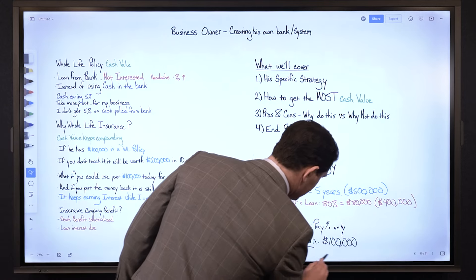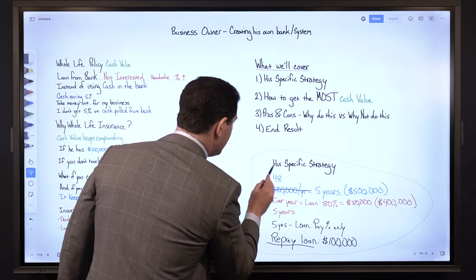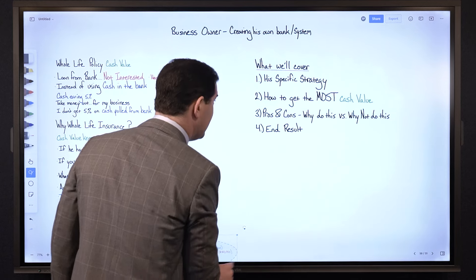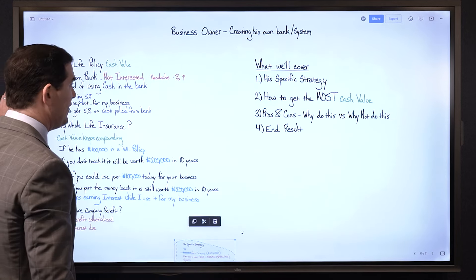So number one, specific strategy: fund for five years, use the money, pay interest on the money that I use, and then pay it all back afterwards.